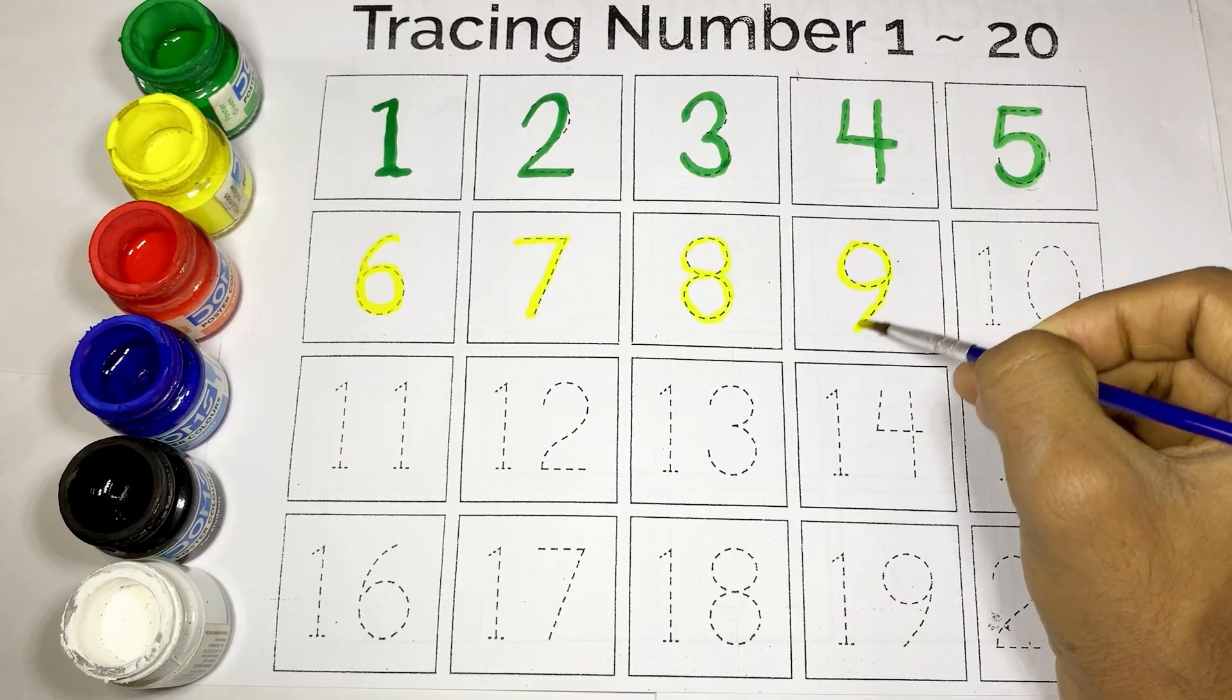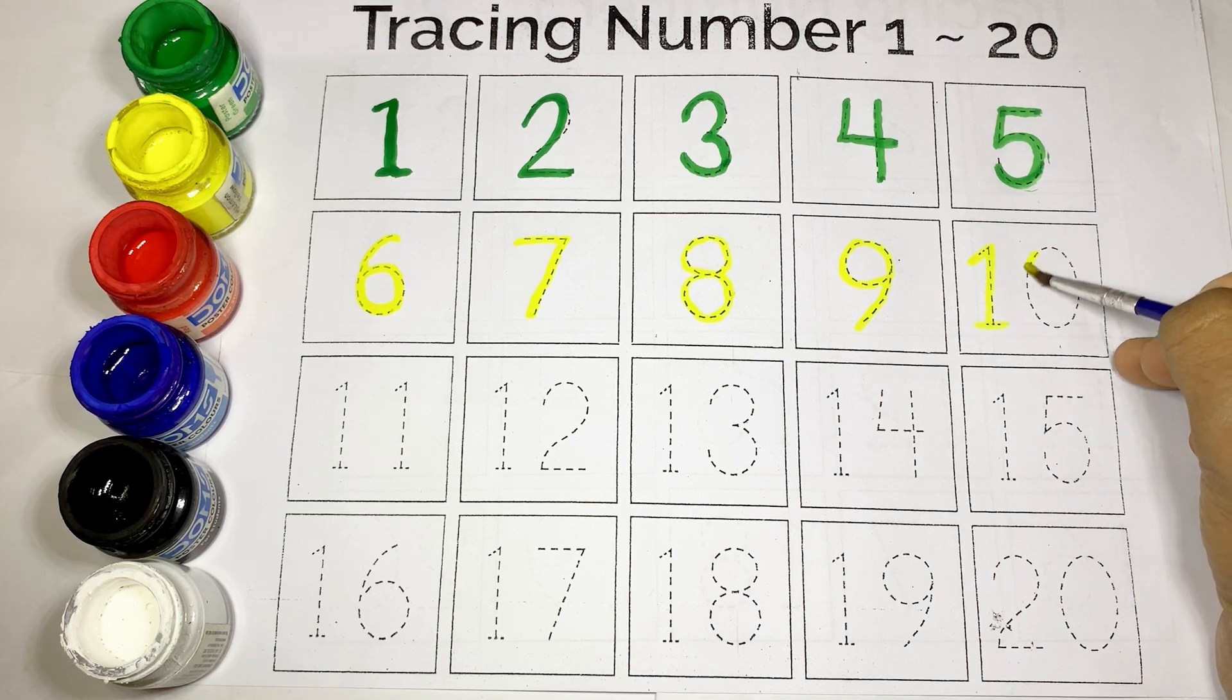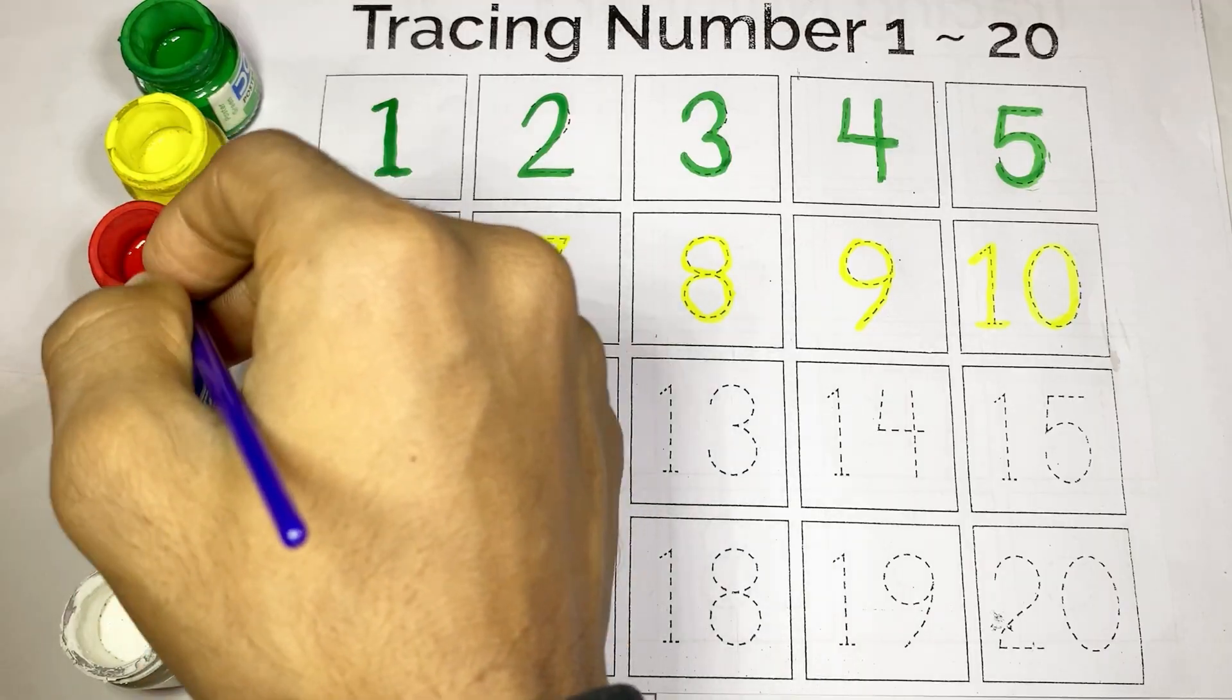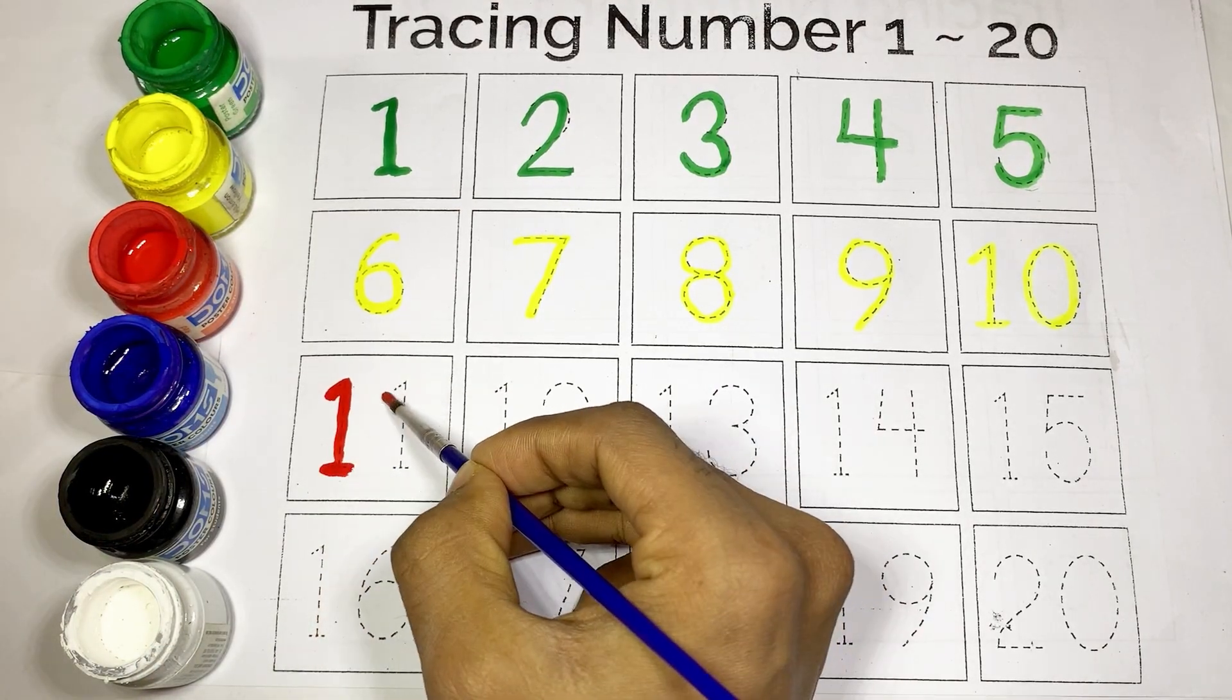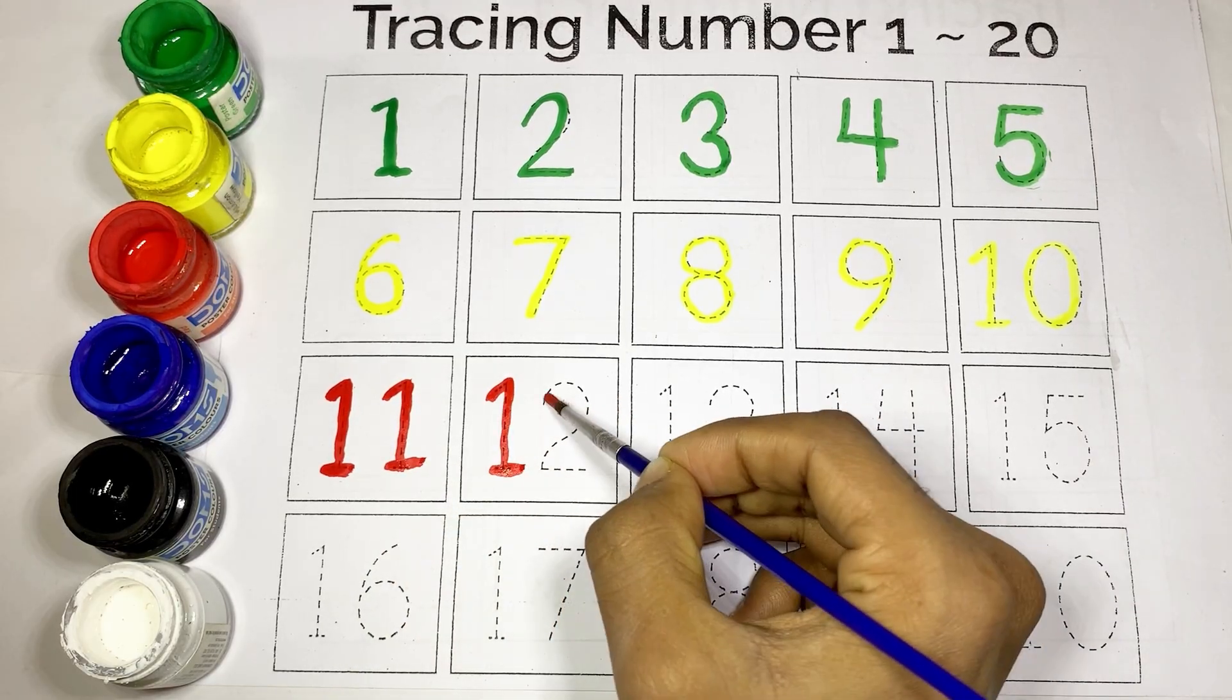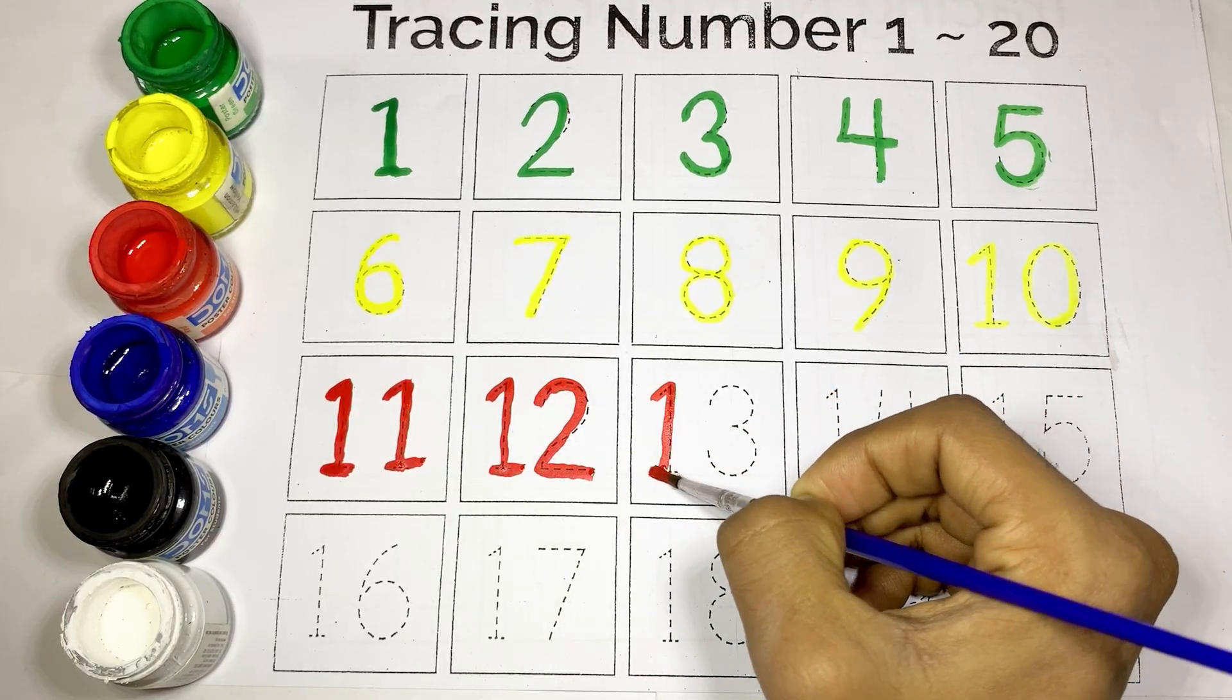Numbers eleven to fifteen use red color. This is eleven. This is twelve. This is thirteen. This is fourteen. This is fifteen.